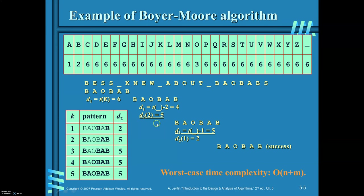The mismatched character is underscore. Look at the shift value for underscore — it is six. D1 = six minus two = four, where two is the number of characters matched. Then find D2: two characters are being matched, so D2[2] equals five — you have to shift by five character length. D1 is four and D2 is five, so the maximum is five. You are required to shift the pattern by five character length.